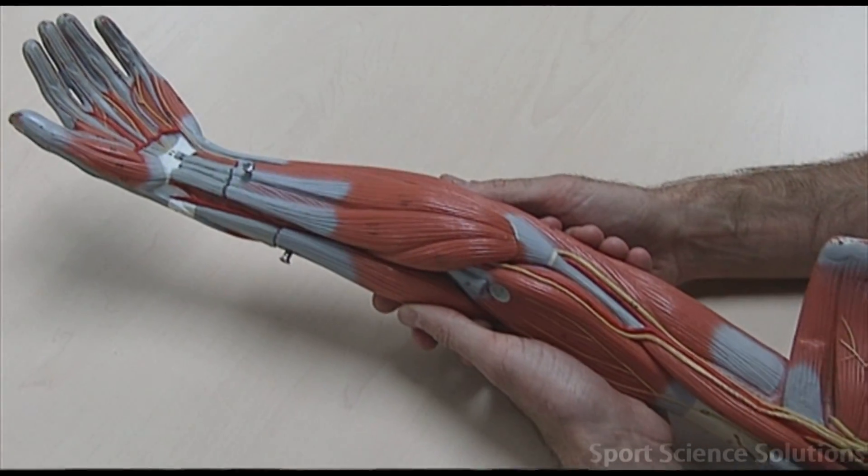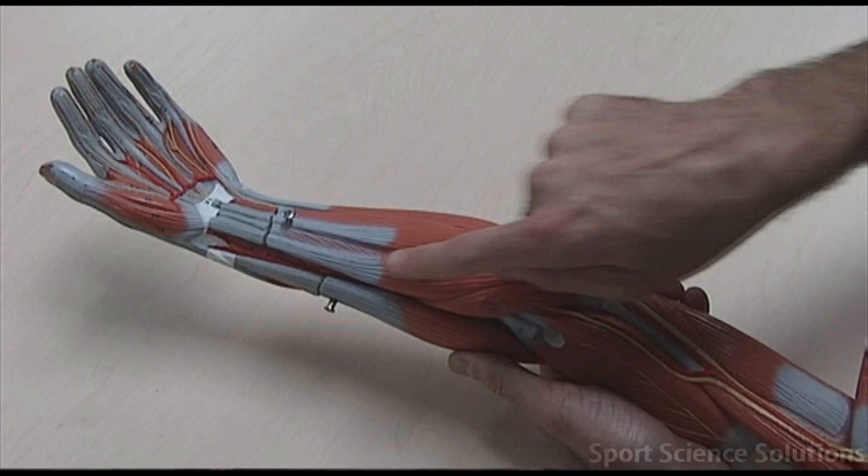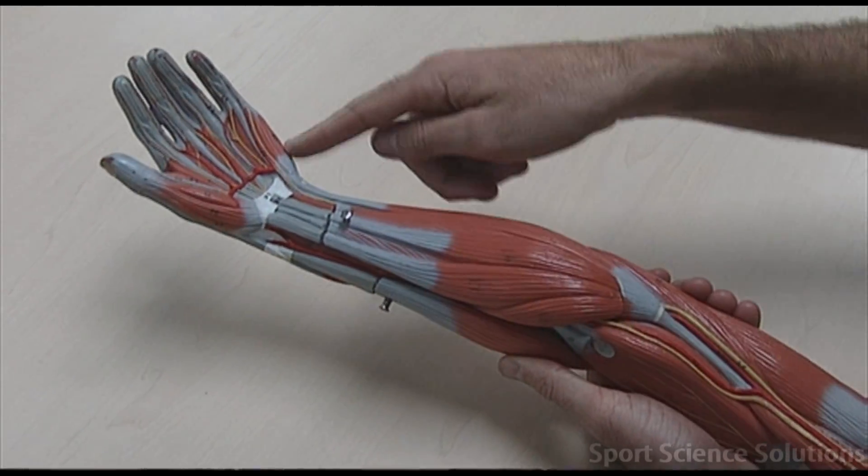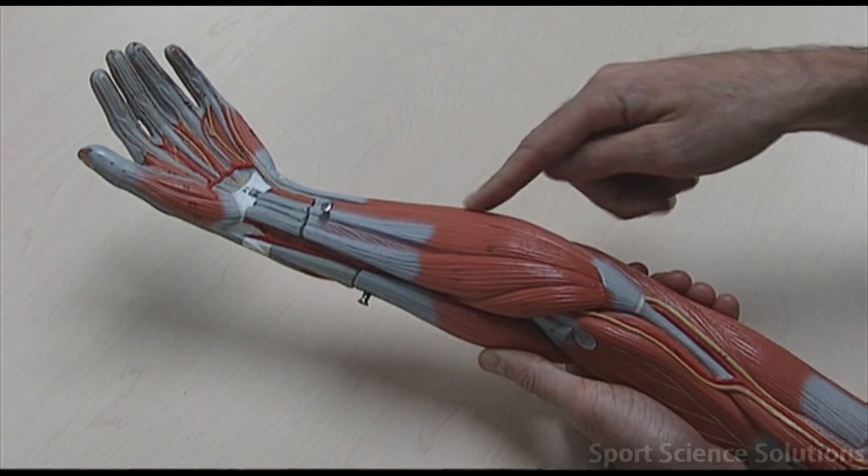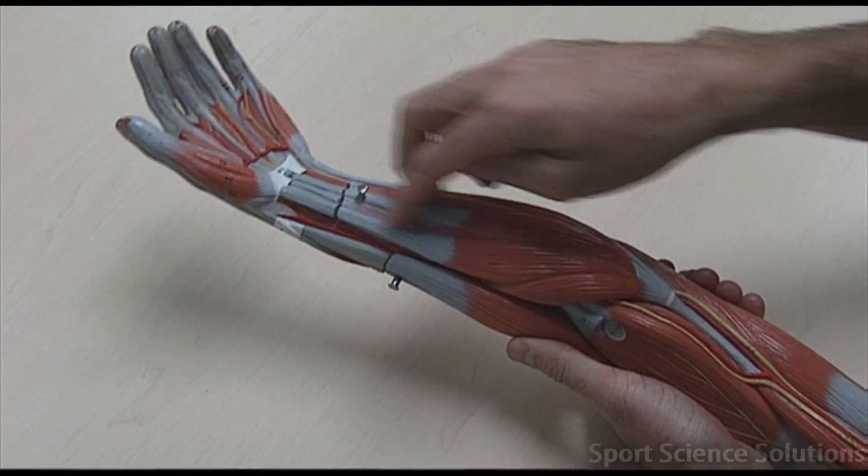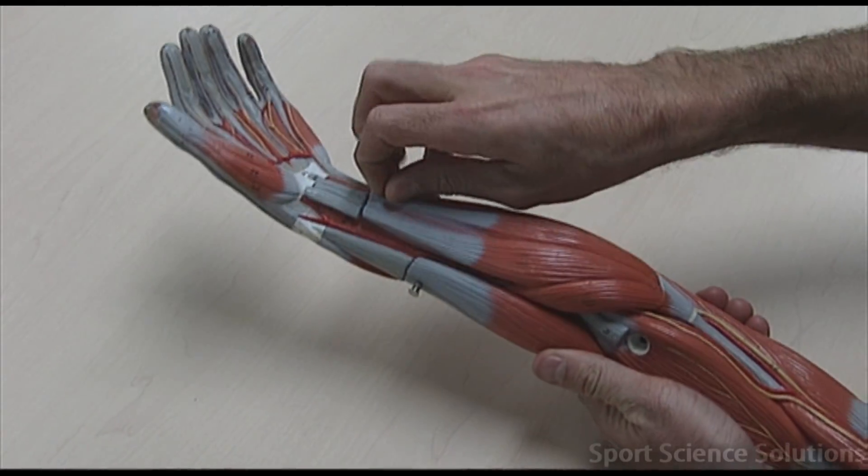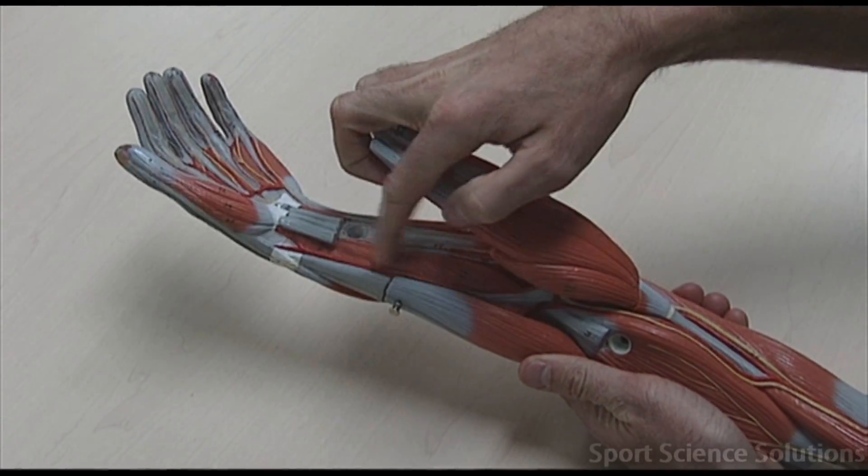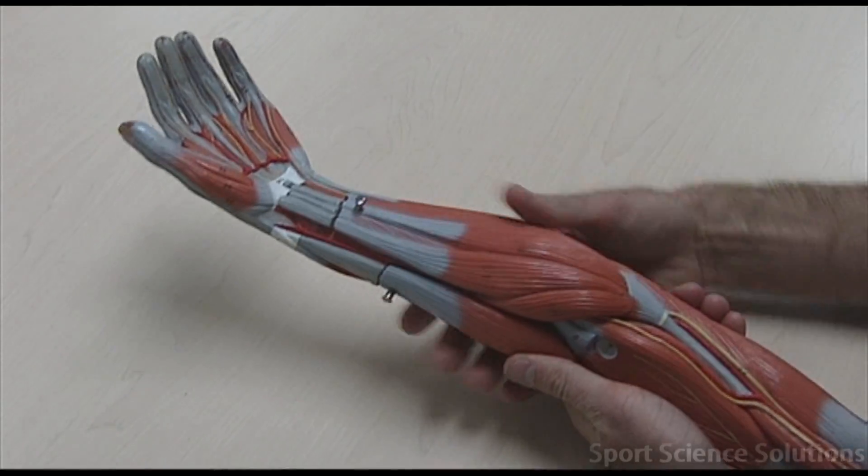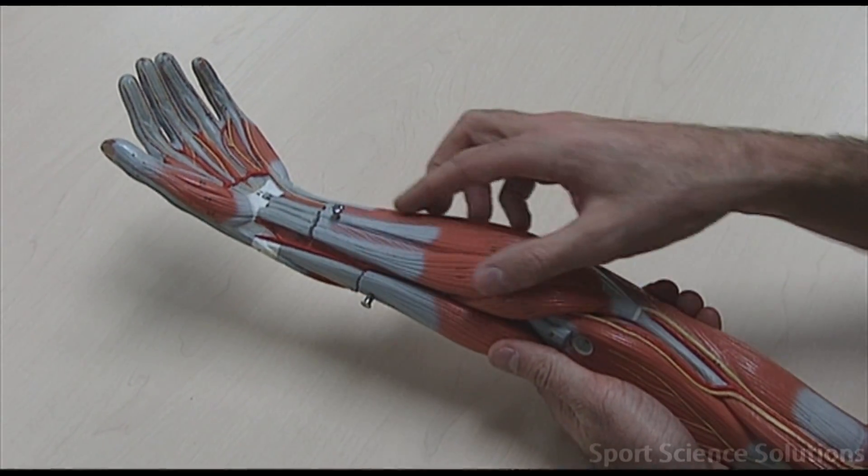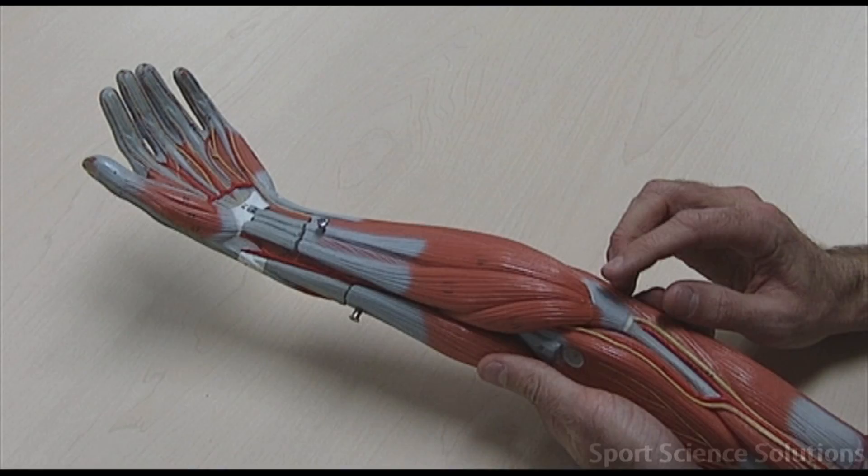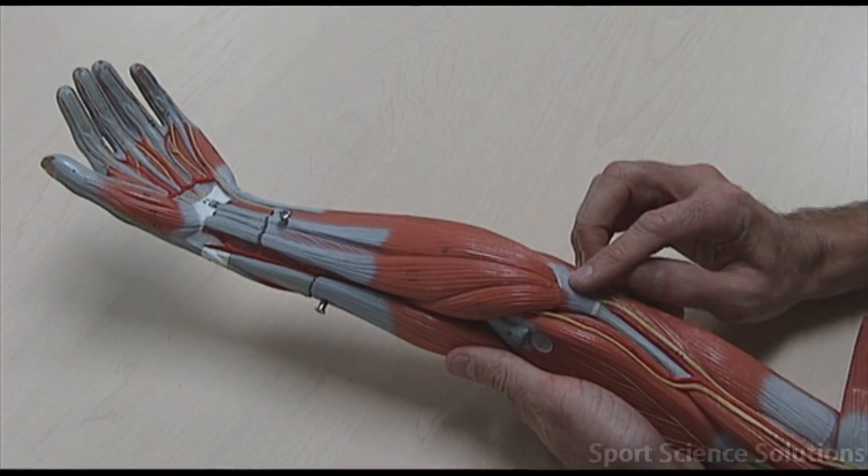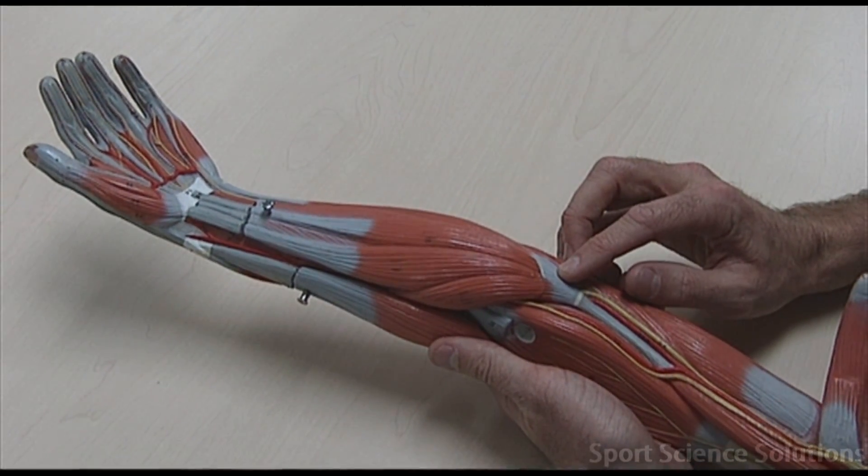Looking at the flexor muscles on the forearm here, we've got the flexor carpi radialis, flexor carpi ulnaris, the flexor digitorum superficialis, and the flexor pollicis longus, which is deep to the thumb. It's also important to note that these four muscles all have a common origin, which is right here at the medial epicondyle of the humerus.